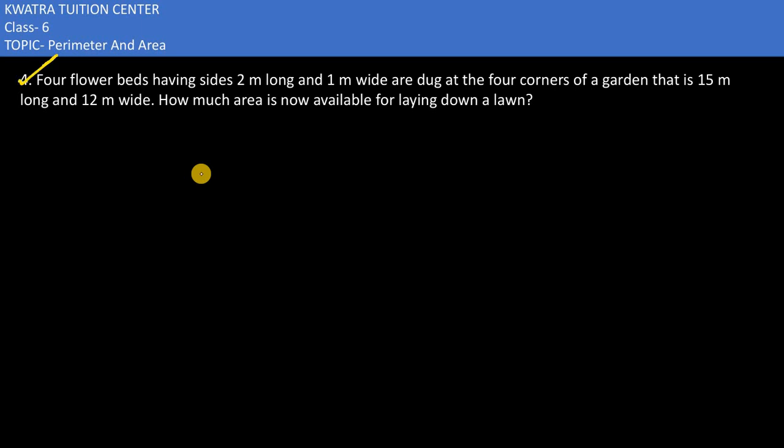Let's have a look at the fourth one. It says four flower beds having sides 2 meters long and 1 meter wide are dug at the four corners of a garden that is 15 meters long and 12 meters wide.